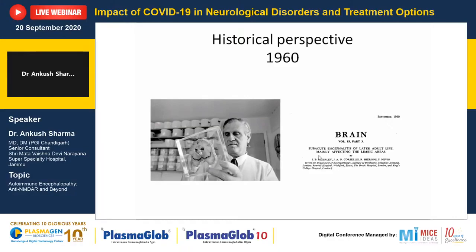Before this paper, most subacute encephalitis patients either had syphilis or subacute sclerosing panencephalitis. Porcellis described three patients who had subacute encephalitis with memory disturbances, psychiatric abnormalities, and seizures. Post-mortem sections showed intense inflammation in their limbic areas. One patient had associated malignant transformation of a mediastinal lymph node, which was remarkable, but the group concluded it was probably not related to the disease process.